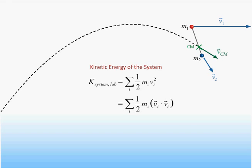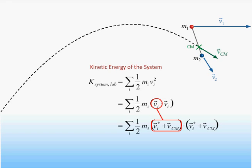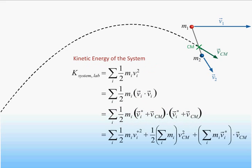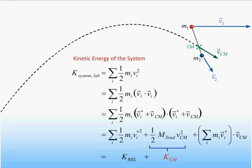We can express the velocity of an object in the lab frame as the vector sum of the velocity of the object in the center of mass reference frame plus the velocity of the center of mass in the lab reference frame. When we make this sum, we see that the total energy of the system as viewed in the lab frame can be written as the sum of just two terms. The first term is the sum of the kinetic energies of the objects as viewed in the center of mass frame, and the second term is the kinetic energy of the center of mass as viewed in the lab reference frame. The remaining terms involve the total momentum in the center of mass reference frame, which by definition is always zero.